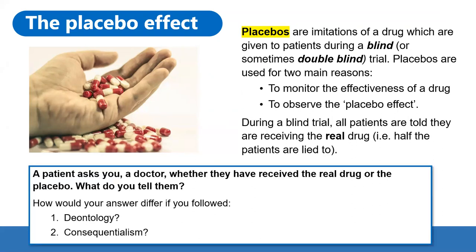We've got an example to discuss. Let's say a patient asks you, a doctor, whether they've received the real drug or a placebo. What would you tell them? And how would your answer differ if you followed, firstly, deontology, or secondly, consequentialism?